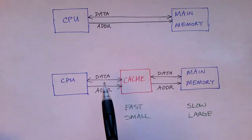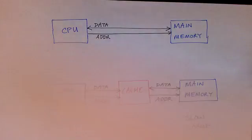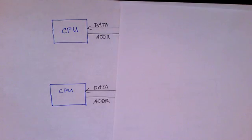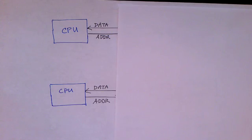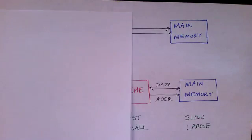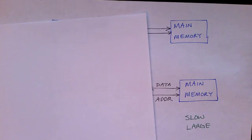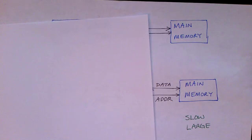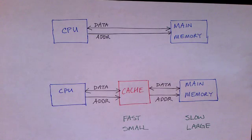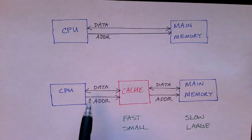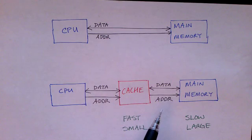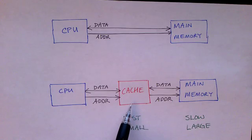Notice that from the CPU's point of view, it looks exactly the same whether there's a cache there or not. In both cases, the CPU sends an address to the memory when it wants to read or write, and it either gets data back or it sends data to the memory. It also looks the same from the memory's point of view. So cache can be added to the system and it's somewhat transparent — the CPU doesn't really have to be changed and the main memory doesn't have to be changed. The cache is interposed and it speeds the whole operation up.